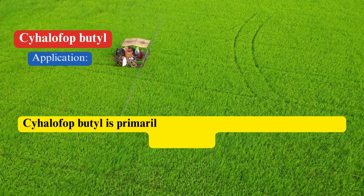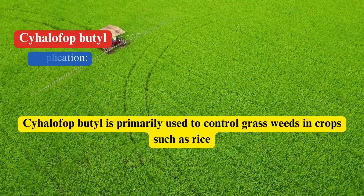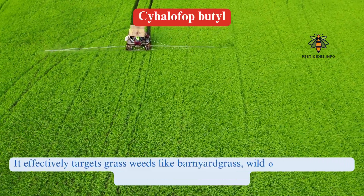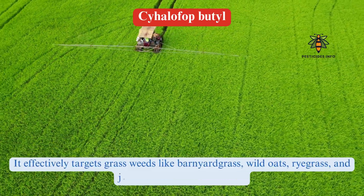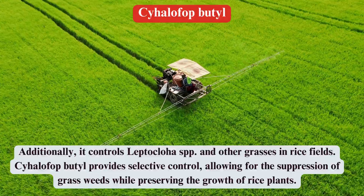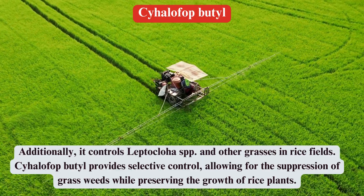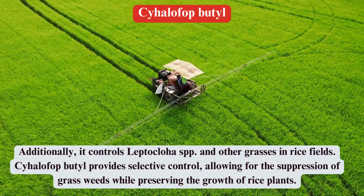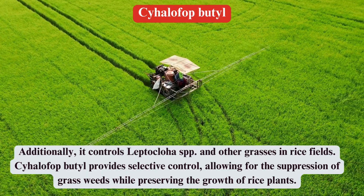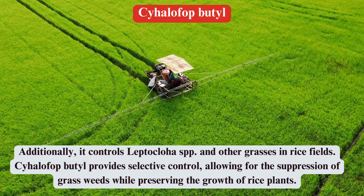Uses. Cyhalophop butyl is primarily used to control grassweeds in crops such as rice. It effectively targets grassweeds like barnyard grass, wild oats, ryegrass, and Johnson grass, among others. Additionally, it controls Leptochloa spp. and other grasses in rice fields. Cyhalophop butyl provides selective control, allowing for the suppression of grassweeds while preserving the growth of rice plants.